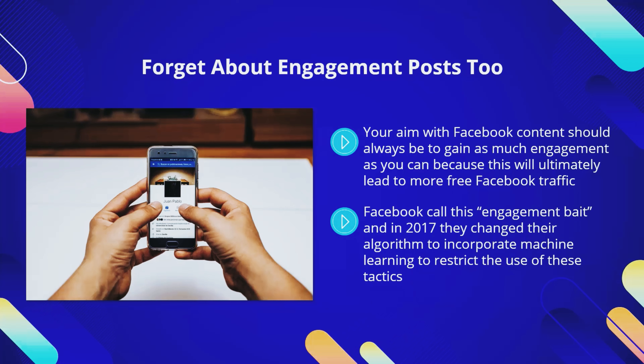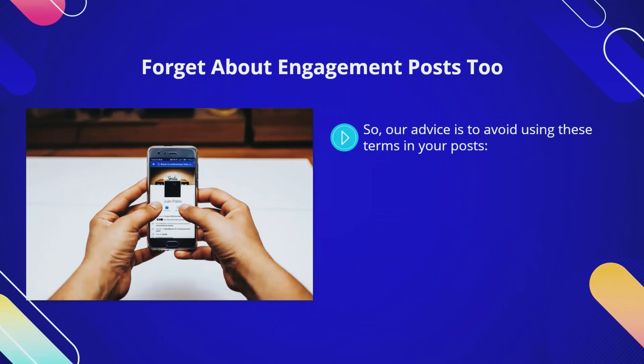The algorithm change looked for posts that tried to persuade others to engage, such as asking them to comment, share, like, or tag. The algorithm will restrict the reach of Facebook pages that continually use these tactics. Our advice is to avoid using these terms in your posts: comment, tag, vote, and like. It just makes a lot of sense to avoid doing things Facebook doesn't like in an attempt to get more clicks.